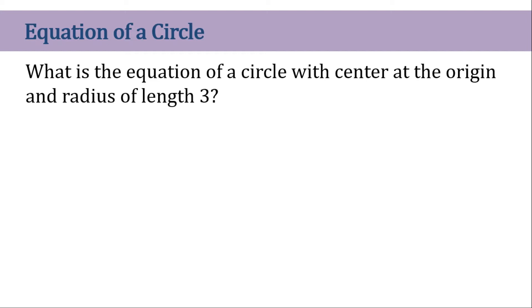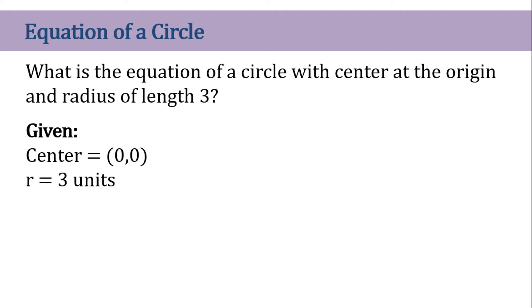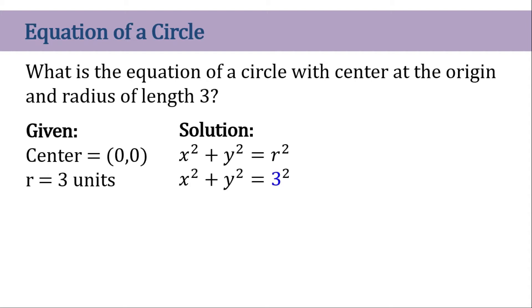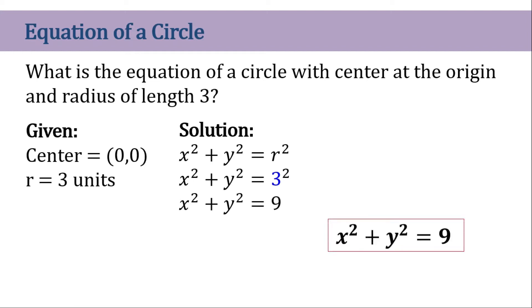What is the equation of the circle with the center at the origin and the radius of 3? Our givens are: center at (0, 0) and radius is 3 units. We write the circle equation for center at origin, substitute the radius, and simplify. This is now the circle equation whose center is at the origin with a radius of 3.